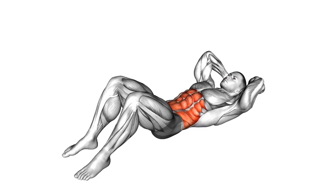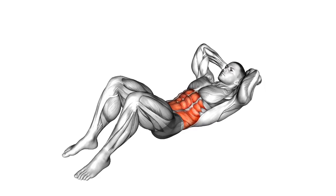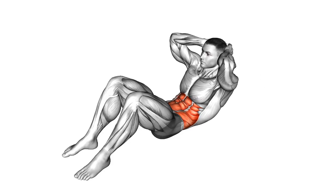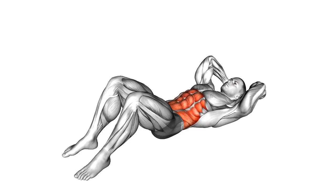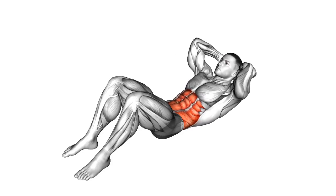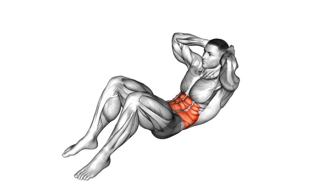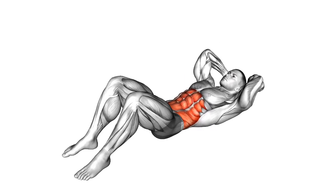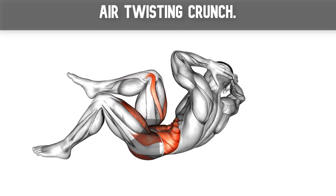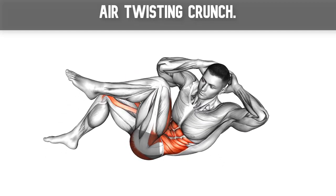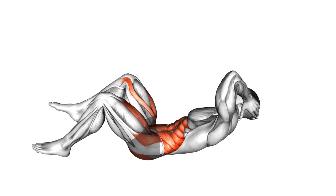Sit-Ups: Sit-Ups are a classic exercise that involve lying on your back with your knees bent and feet flat on the ground, and then lifting your upper body towards your knees. This exercise primarily targets the rectus abdominis muscle and can help improve core strength and tone the abdominal muscles.